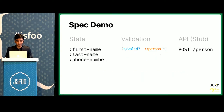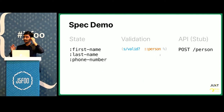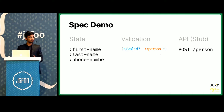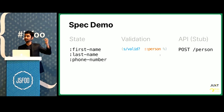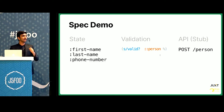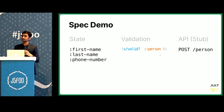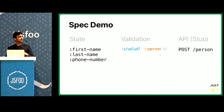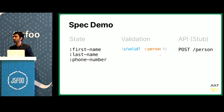Spec lets you do more than static type checking. I have another demo: a form with three input values — first name, last name, and phone number. There's a validation function provided by the Spec library, and if the validation passes, the data is submitted to an API — which is a stub in my demo.